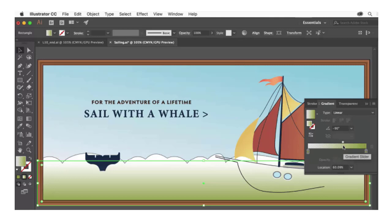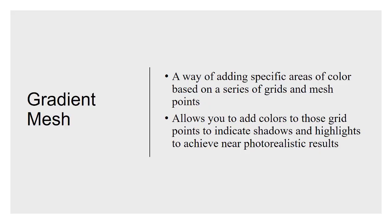We're going to move on from the gradient fill tool and talk about gradient meshes. A gradient mesh is much more precise than a simple gradient, and it allows you to assign your gradient to specific areas on a grid. By adding different colors to points on a grid you can make very complex gradients — transitions between areas that allow you to render shadows and highlights. That's the key to making things look three-dimensional or photorealistic.